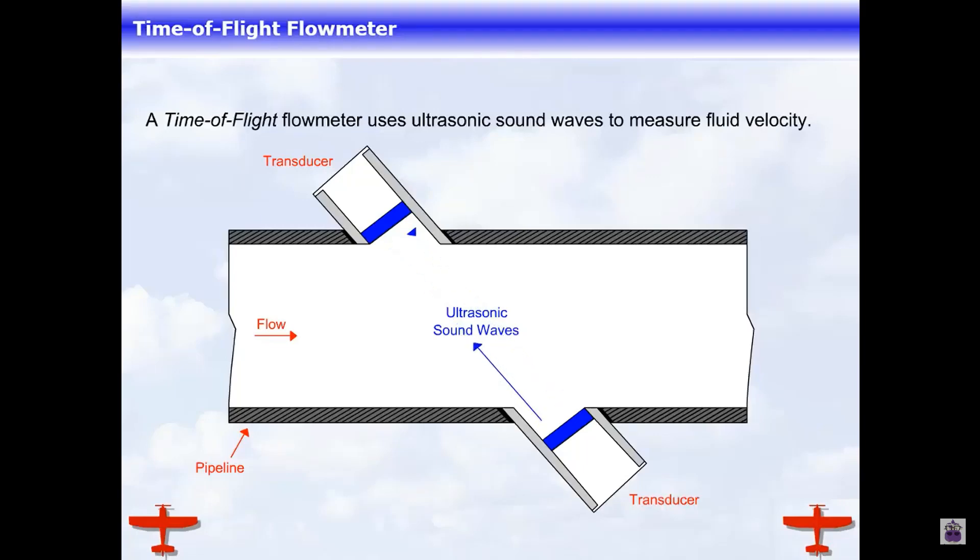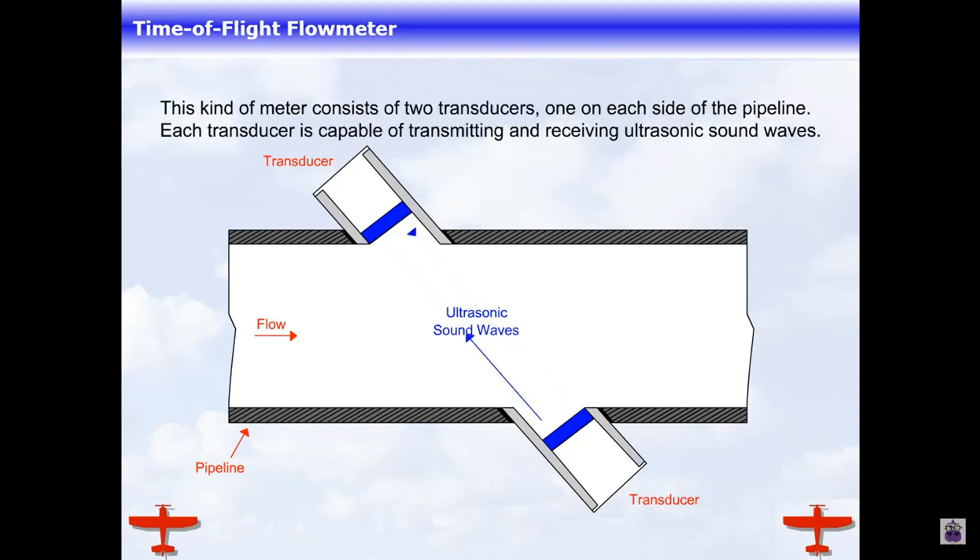A time-of-flight flow meter uses ultrasonic sound waves to measure fluid velocity. This kind of meter consists of two transducers, one on each side of the pipeline. Each transducer is capable of transmitting and receiving ultrasonic sound waves.